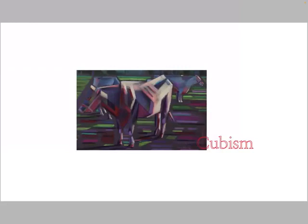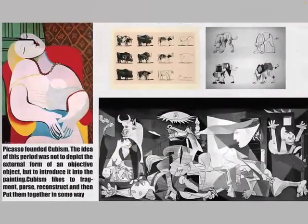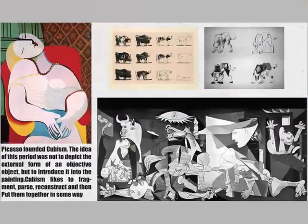Finally there is cubism, in which painters like to take objective things and reorganize them — by subjectively dismantling them, reorganizing them, and putting them back together in a new way.